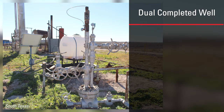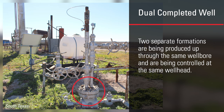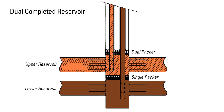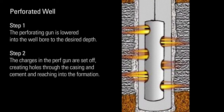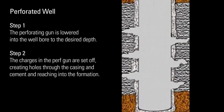This wellhead is on a dual completed well. Two separate formations are being produced up through the same wellbore and are being controlled at the same wellhead. Not all production areas use dual completed wells. The same type of well can be found throughout the mid-continent production field. This illustration shows how a dual completed well functions coming out of the same wellhead. A well needs to be perforated in order to allow resources to enter the wellbore and come to the surface, typically in the completion stage of operation.